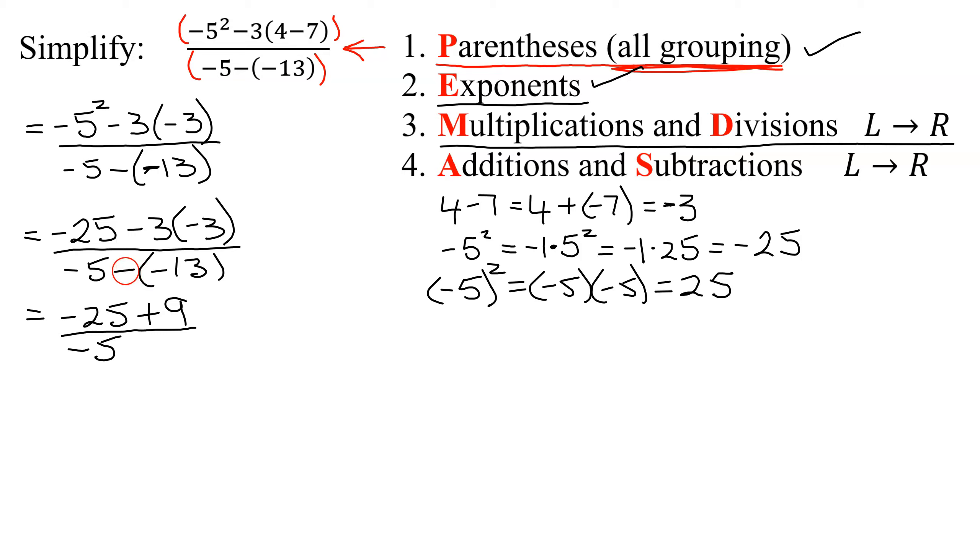All divided by negative 5. And now what is the opposite of negative 13? Well, the opposite of negative 13 is positive 13. So I've taken care of my multiplications. I cannot do the division indicated by this division bar until I've simplified the denominator and the numerator.